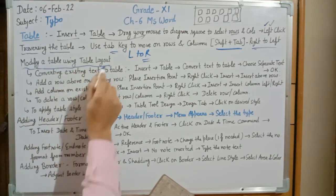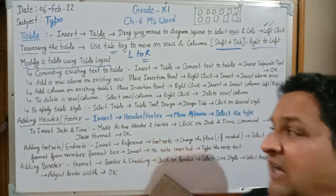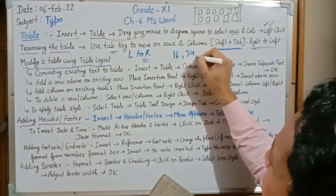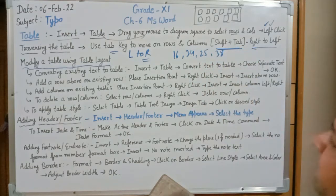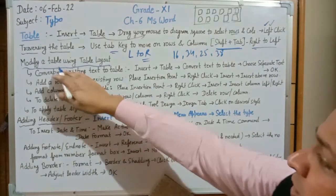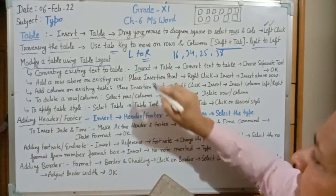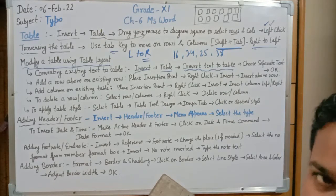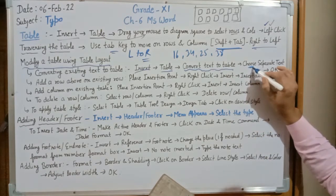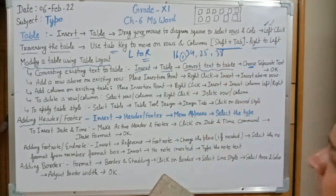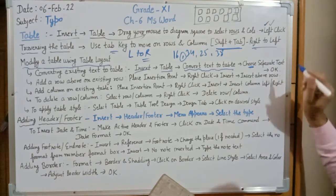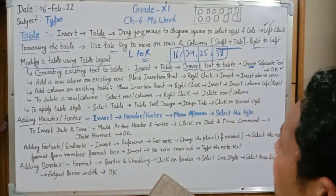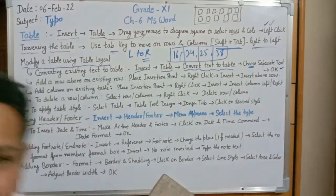Next topic is modifying a table. Using Table Layout we can perform a number of operations. For example, converting existing text to a table: suppose we have text like 16, 34, 25, 38 and we want to convert it to a table. Click on Insert, select the Table option, then select 'Convert Text to Table'. Choose the separator — here we use the comma operator — then press OK. The data will be converted into tabular form with four columns.